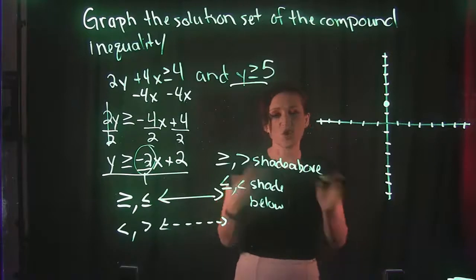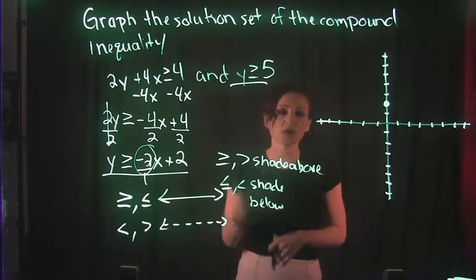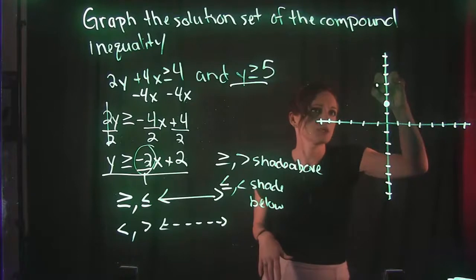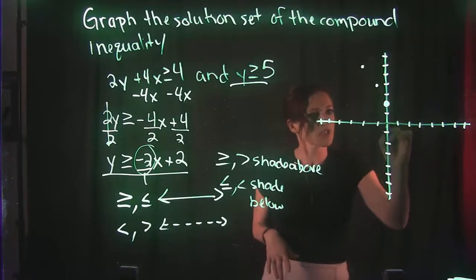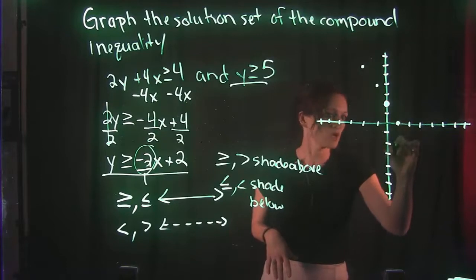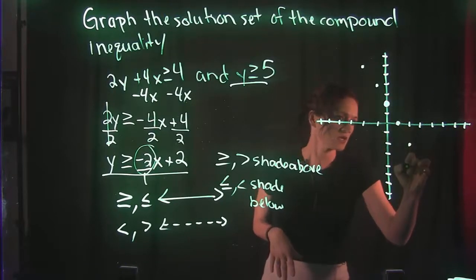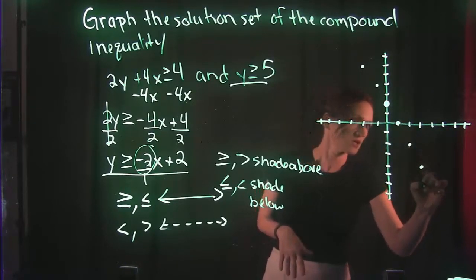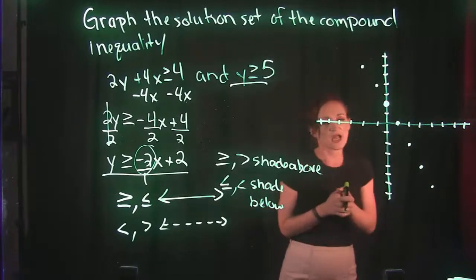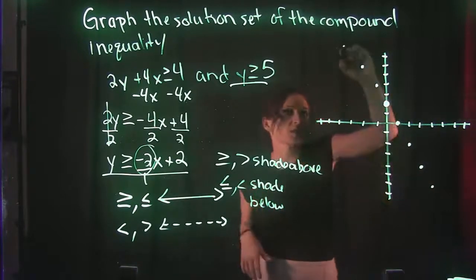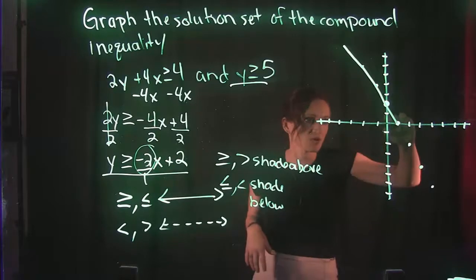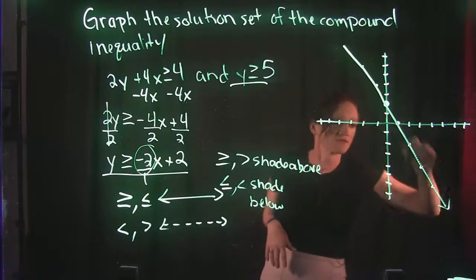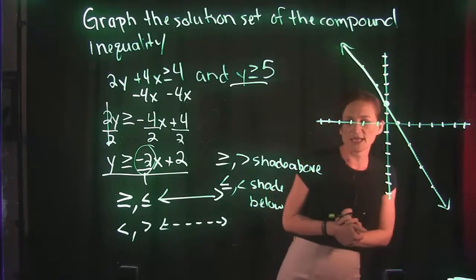So that's up 2 to the left 1, up 2 to the left 1. Which is the same thing as down 2 to the right 1, down 2 to the right 1, down 2 to the right 1. And you can decide how many points you make. I'm going to go ahead and just fill up the graph that I have here. And we have a solid line.